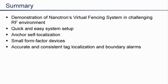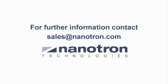Here is a short summary of what we presented today. We demonstrated Nanotron's virtual fencing system in a challenging RF environment. The tests showed that the system setup procedure is very easy and takes only little time. This is not least due to the anchor self-localization feature, which enables quick and automatic computation of fixed anchor node positions. The system's usability is further increased by small form factor devices. Nanotron's virtual fencing system provides accurate and consistent tag localization and boundary alarms. If you have any questions or suggestions, please contact us at sales@nanotron.com.